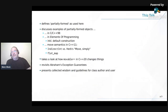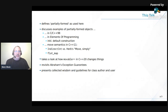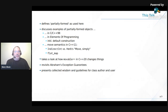This talk will first define 'partially formed' as we use it. Then we'll discuss examples of partially formed objects as early as C and C++98, in Elements of Programming — the foundational book on which this is based. Then we'll talk about move semantics in C++11, in particular about the indirect_int from Herb Sutter's 'Move Simply' blog post, and about flat_map. Then we'll look at C++20, the movable concept, and how that changes things. We'll briefly revisit Abrahams' exception guarantees and present collected wisdom and guidelines for class authors and users alike.